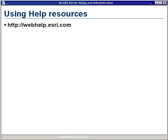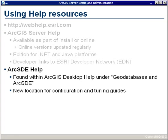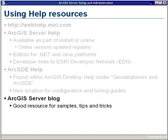One last topic covers the help resources available to you. All help documents can now be found online at webhelp.esri.com. There you'll find different sections for ArcGIS Desktop, Server, ArcIMS, and so on, updated regularly as new information becomes available. The ArcGIS Server Help has links for both the Java and .NET platforms, as well as developer links to the ESRI Developer Network site. If you're looking for information on ArcSDE, that can be found in the Desktop Help under Geodatabases and ArcSDE, including the ArcSDE Configuration and Tuning Guides from previous releases. There's also a link to the ArcGIS Server Blog, a good resource if you're looking for code samples.